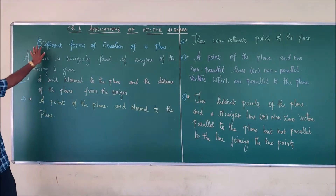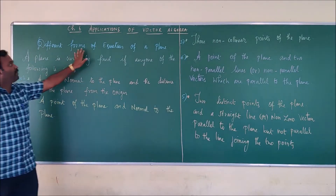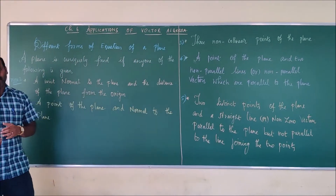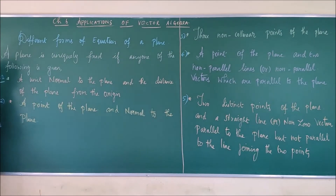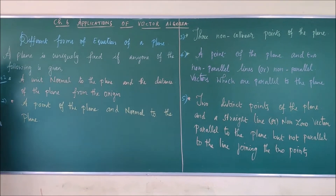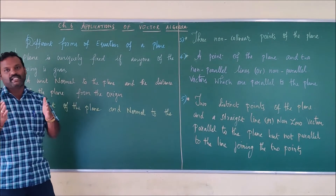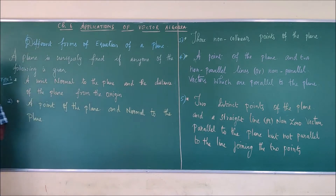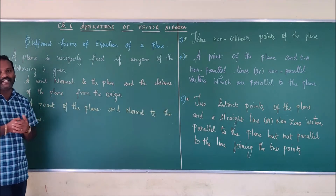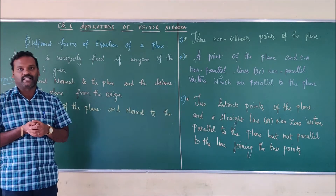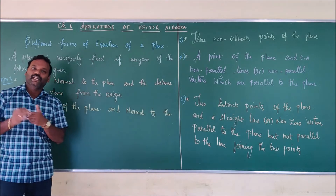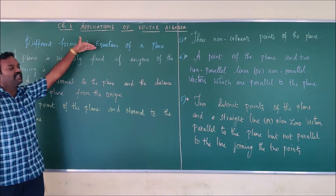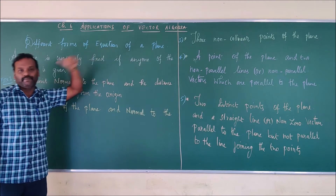Next we are going to see the different forms of the equation of a plane. In the last session we discussed the different forms of the equation of a straight line — that is the vector equation and the Cartesian equation. In the vector equation we discussed the parametric vector equation, non-parametric vector equation, and the Cartesian equation. In the same way, we are going to discuss about the plane.